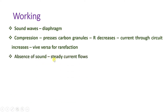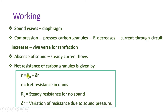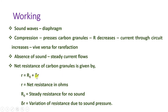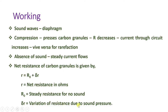In the absence of sound, a steady current will flow. During sound, there will be a change in current as per this mechanism. The net resistance of the carbon granules is r = r0 + Δr, where r is the net resistance, r0 is the steady resistance for no sound, and Δr is the variation of resistance due to sound pressure. This Δr changes based on the sound pressure applied to the carbon granules.